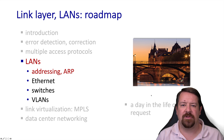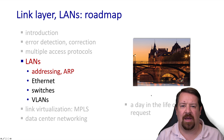Continuing on in chapter six, we have talked about the problems of multiple access to shared channels. And now we're going to get down to some more details of link layer protocols, starting with how they handle addressing.